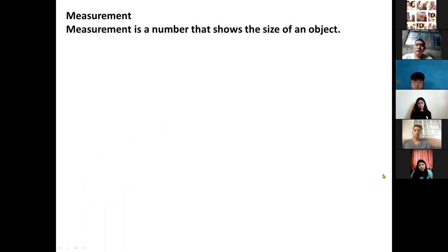Now we have to define measurement. What is the definition of measurement? As our starting point, Gio, please read. Measurement is a number that shows the size of an object. It's a number that shows the size of an object. But take note, it's a number, and it must be accompanied by a unit. For example, if you say 5, what is that 5? You need an object. When you say 5 meters, it's just a statement. But when you add an object, that's the measurement of the object.